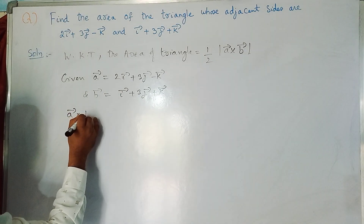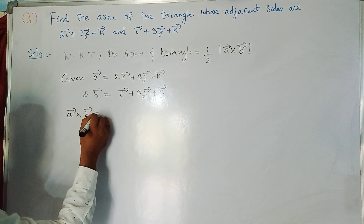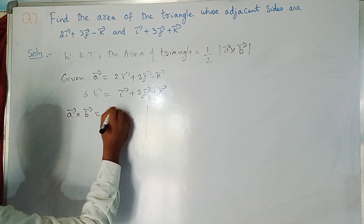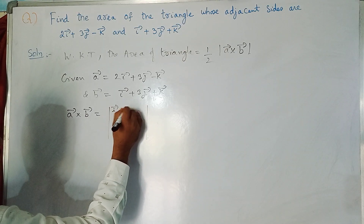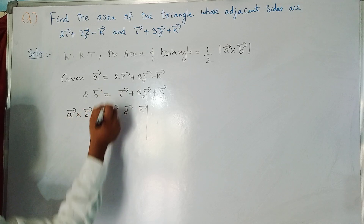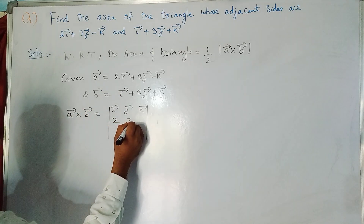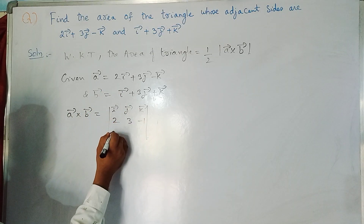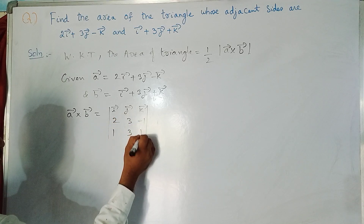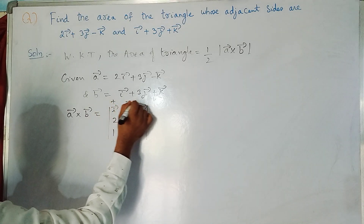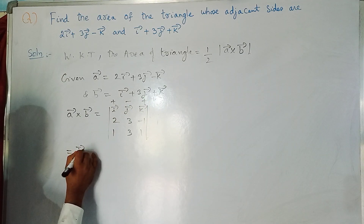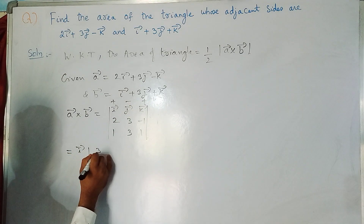To find a × b, set up the determinant. The first row is i, j, k. The second row (components of a) is 2, 3, -1. The third row (components of b) is 1, 3, 1. The sign pattern is plus, minus, plus.